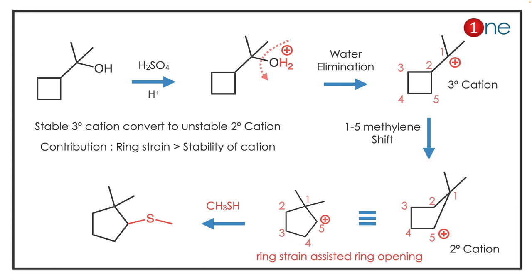What really happens is that ring strain forces the reaction to open the ring. The ring opens at the 5-position, attaches at the 1-position, and forms a secondary cation — giving a new five-membered ring. The cation then reacts, forming the new five-membered ring product. The key concept here is that not only does the cation drive the reaction — ring strain also drives the reaction and guides it toward a new reaction pathway.